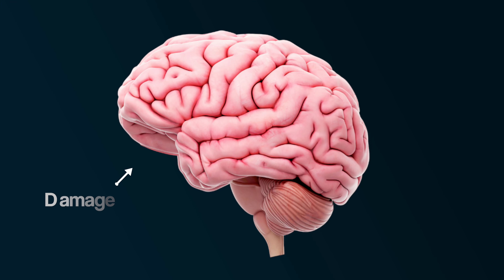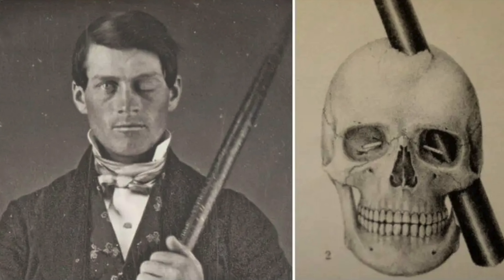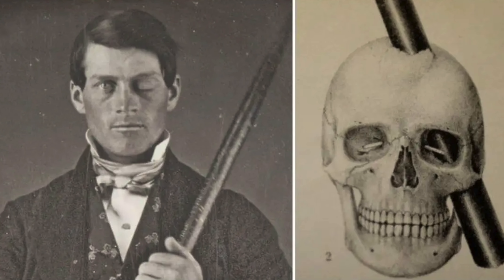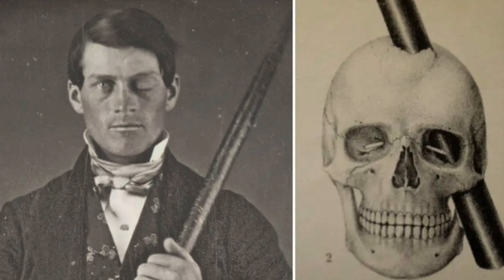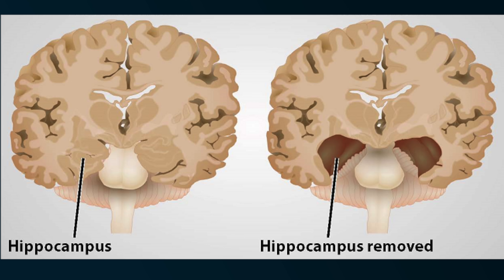What would happen to your behaviour if an illness damaged this part of your brain? Or what about if a metal rod went straight through the front part of your brain? Or how about if this part of your brain was completely removed?